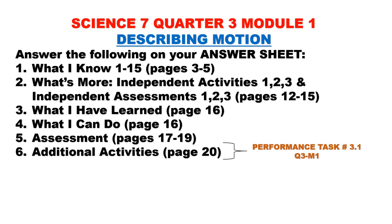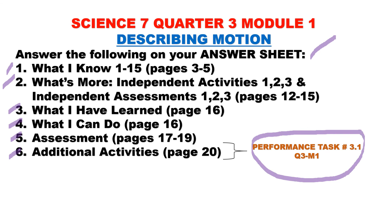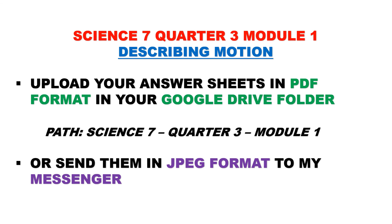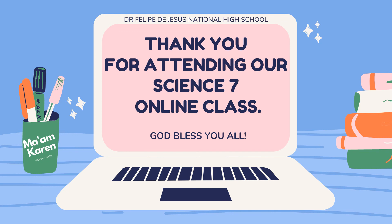For our Quarter 3, Module 1 on Describing Motion, your answer sheet should include: What I Know, What's More, independent activities 1, 2, and 3, independent assessments 1, 2, and 3, What I Have Learned, What I Can Do, Assessment, and Additional Activities — which will be our Performance Task 3.1. When done, upload your answer sheets in PDF format to your Google Drive folder under the pathway Science 7, Quarter 3, Module 1. You may also send your answer sheets in JPEG format via messenger. That's all for today — thank you for attending our Science 7 online class. God bless you all. Goodbye.